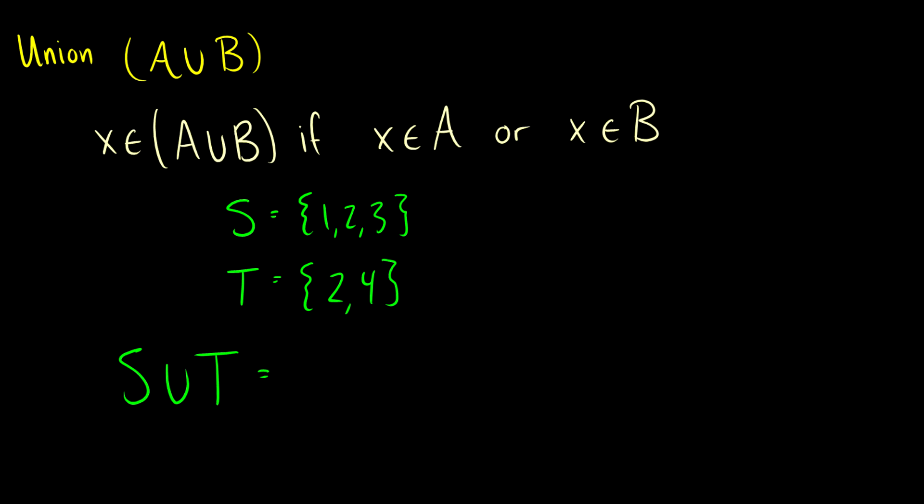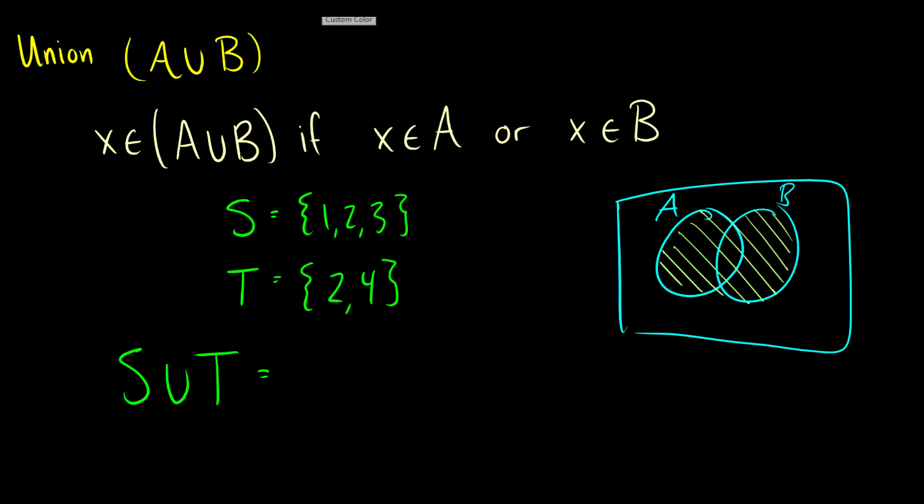So we have some operations we can do with sets. Since talking about one set isn't super helpful. What we can do is we can take the union of two sets. And the union is, say we have a nice little Venn diagram here. We have two sets. One is A, one is B. Then A union B covers all of these objects if it's in A or in B. So I have this written here. X is in A union B if X is in A or X is in B. So if S is 1, 2, 3, and T is 2 and 4, then what is S union T? Well, it's going to be everything in S and everything in T.